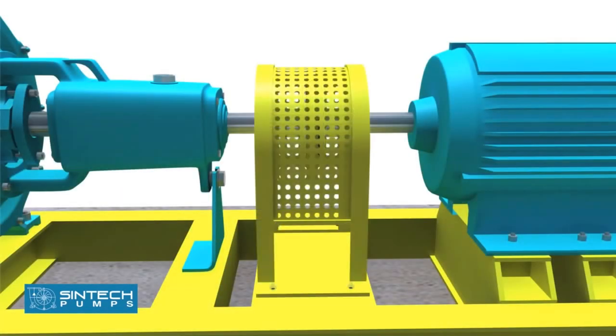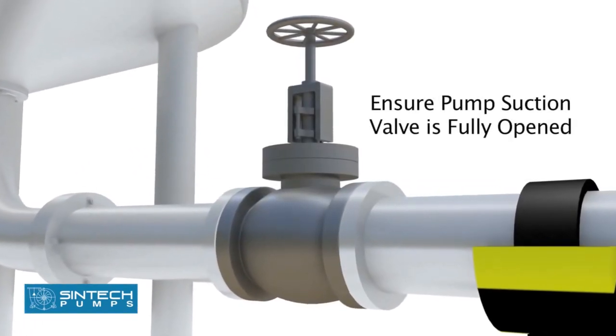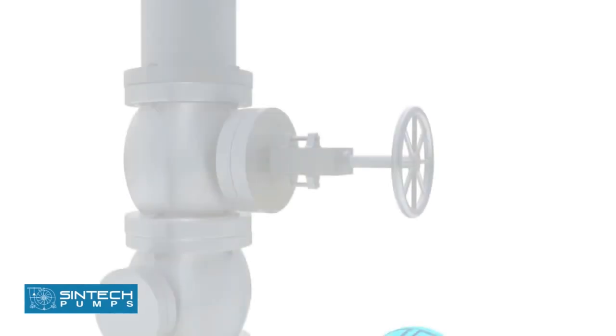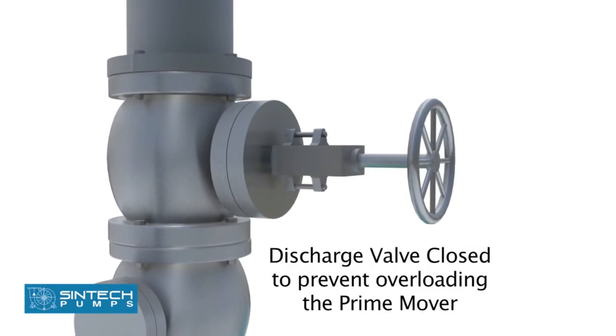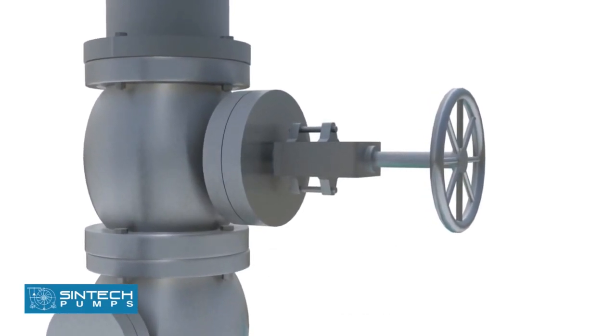Place the coupling guard and tighten the bolts. Ensure that pump suction valve is fully opened and all joints are checked for any leakage. The opening of the discharge valve is kept closed as this prevents the overloading of the prime mover.